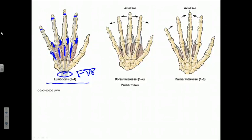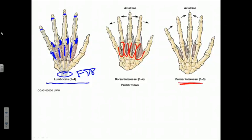The lumbricals arise from flexor digitorum profundus tendons in the palm of the hand and attach to extensor digitorum tendons on the dorsal or posterior aspect of the hand. The interosseous muscles got their name because they arise and attach to the sides of a corresponding pair of metacarpals, deeply embedded in the palm of the hand. The dorsal interosseous muscles are literally found between the metacarpals, while the palmar interosseous muscles are more situated on the anterior sides of three of the metacarpals.